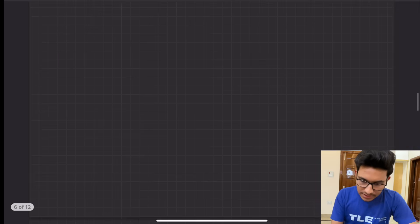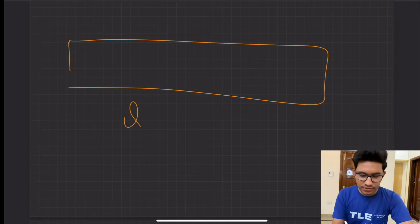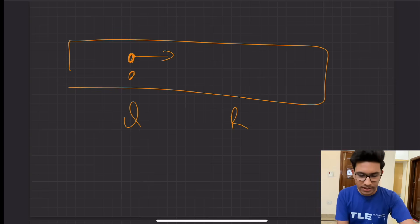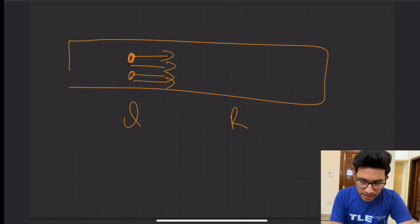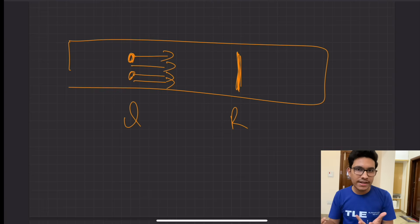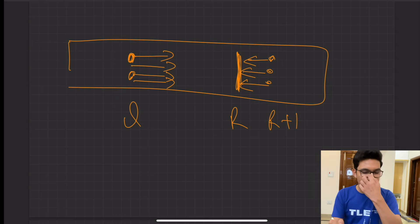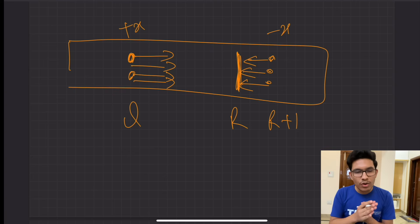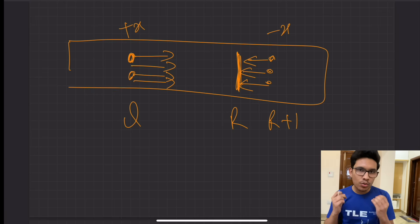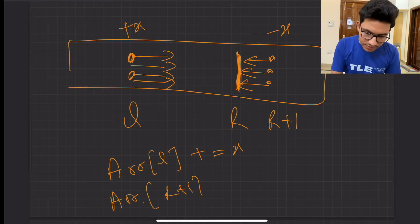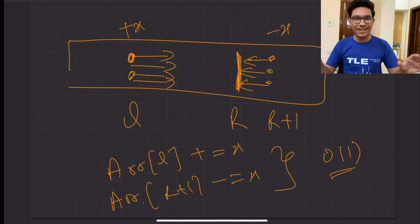Another way to visualize this: imagine you have a gun and you fire X shots from the L-th index. Those shots travel through the array and you want all of them to be nullified at the R+1-th index. So you fire opposite X shots at R+1 — doing +X at L and -X at R+1. When all the shots reach the R+1-th index, they get cancelled out. Using this approach, you can perform a query in just O(1) time — you only do arr[L] += X and arr[R+1] -= X. At the end, once all queries are processed, you take a prefix sum of the entire array to get your final result, which takes O(N) time.